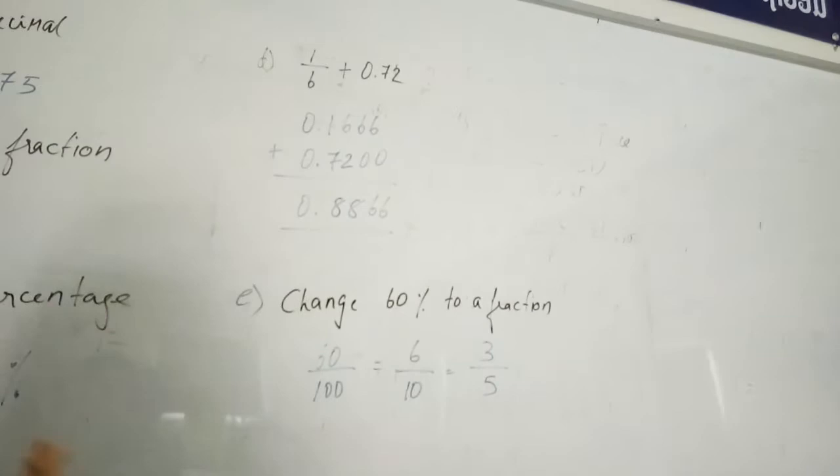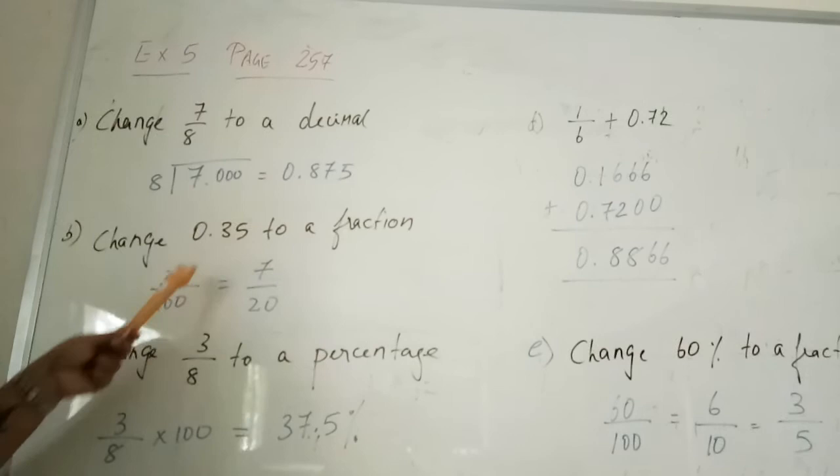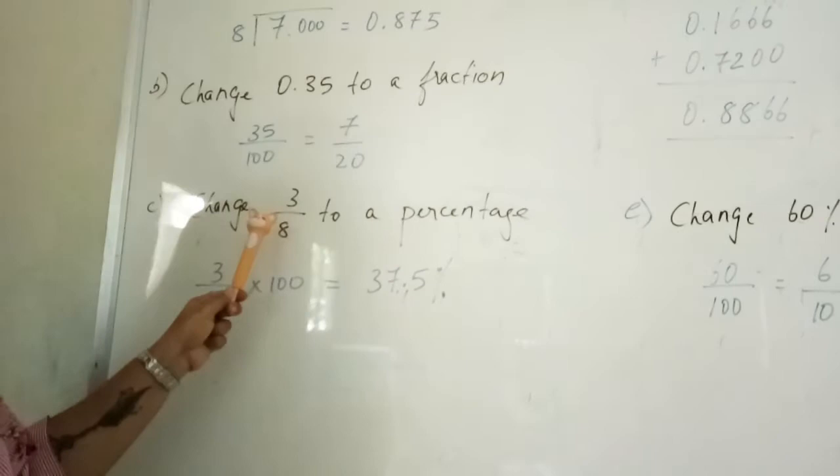So just to recap, if you want to change a fraction to decimal, you divide. And for a decimal to a fraction, you divide by 100. But remember, the number of decimal places, you add so many zeros. Now, to change a fraction to a percentage, you times 100. And to change a percentage to a fraction, you divide by 100 and simplify it. That's it, thank you.